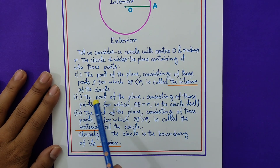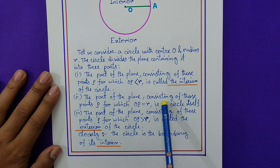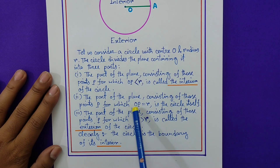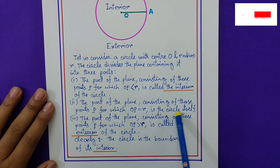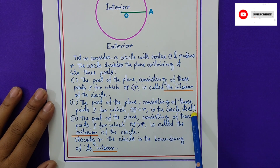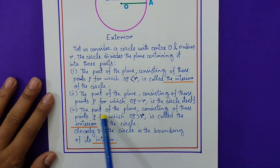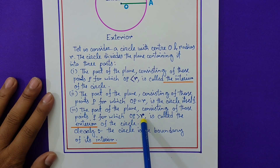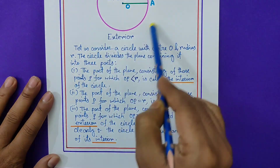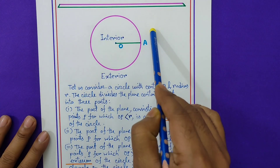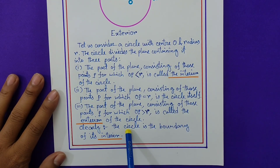Point 2: the part of the plane consisting of those points P for which OP equals R — meaning OP distance and radius are the same — is called the circle itself. Point 3: the part of the plane consisting of those points P for which OP is greater than R — meaning OP distance is more than radius R — is called the exterior of the circle. Exterior means the outside part. Clearly, the circle is the boundary of its interior part.